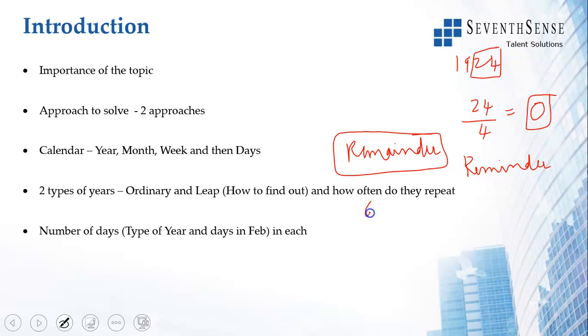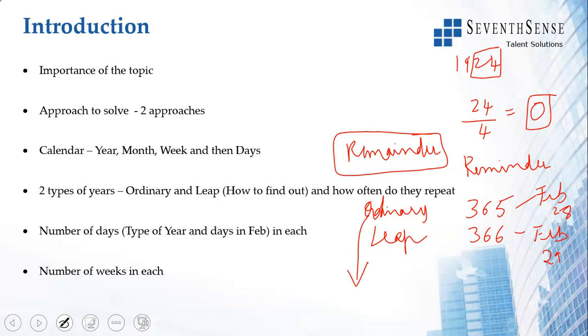Number of days in an ordinary year: ordinary year is 365. In the leap year, it is 366. There is one extra day in a leap year and where does that extra day go? Every other month has the same number of days, except Feb here has 28, here Feb has 29. The number of weeks in each: ordinary year has 365 days, which is 52 × 7 + 1, and leap year is 52 × 7 + 2. So 52 full weeks and then another day. Leap year is 52 full weeks and 2 more days.